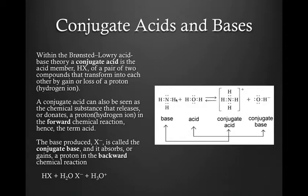Now, within the Bronsted-Lowry acid base theory, a conjugate acid is the acid member, HX, of a pair of two compounds that transform into each other by the gain or loss of a proton, the hydrogen ion. The conjugate acid can also be seen as the chemical substance that releases or donates the proton in the forward chemical reaction, hence the term acid.